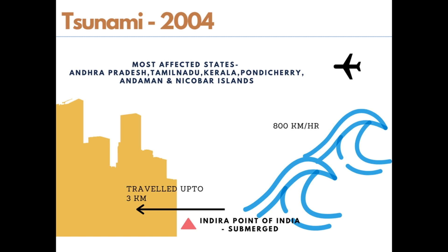The earthquake epicenter was in Sumatra, and its waves moved toward Andaman and Sri Lanka, decreasing in strength and speed from 700–900 km/h down to 70 km/h. Tsunami waves traveled up to 3 kilometers inland on coastal lands. It killed around 10,000 people in India and approximately 2 lakh people worldwide. The highly affected coastal regions in India were Andhra Pradesh, Tamil Nadu, Kerala, Pondicherry, and Andaman and Nicobar Islands.